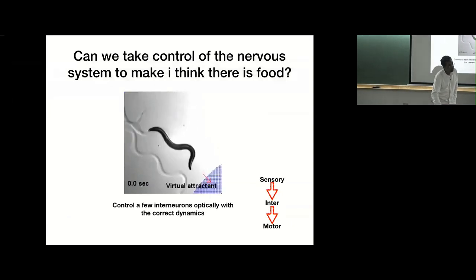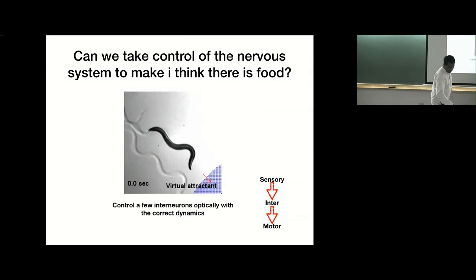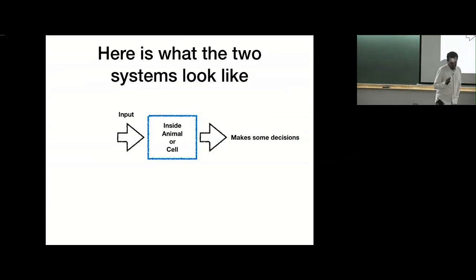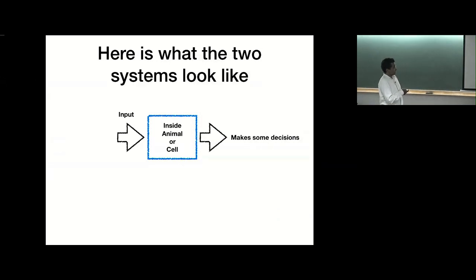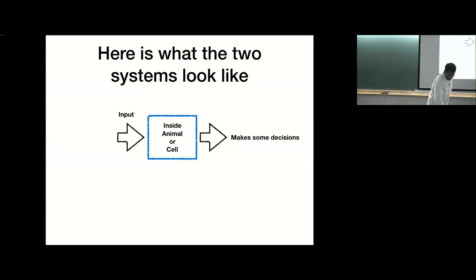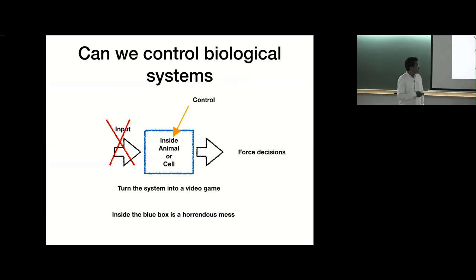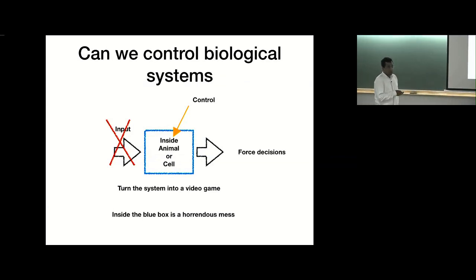When you say few neurons — it's about three neurons with the right dynamics. The broader question is: if we really want to start taking control of these biological systems, you have some input, there's a box which is the animal or cell, and it makes decisions — in the case of stem cells it decides to become parts of the brain; in the case of the animal it decides to go forward or backward or left or right. What we want to do is forget about the inputs, directly control the insides of the animal or cell, and make it do what we want — turn it into a game and control it precisely.